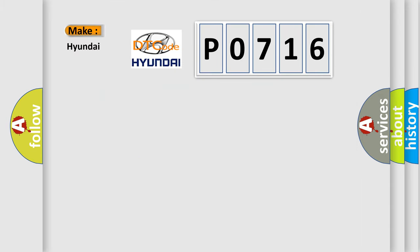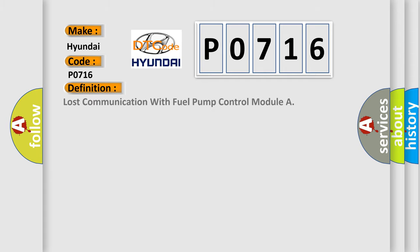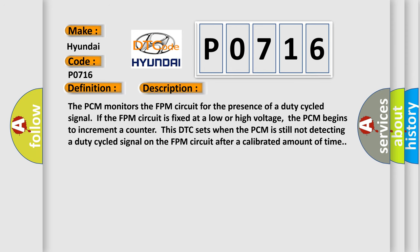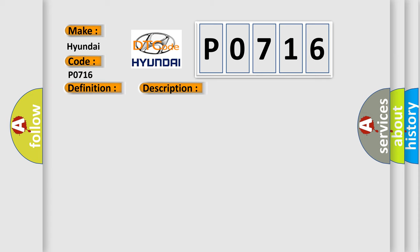What does the diagnostic trouble code P0716 interpret specifically? The basic definition is: lost communication with fuel pump control module. The PCM monitors the FPM circuit for the presence of a duty cycled signal. If the FPM circuit is fixed at a low or high voltage, the PCM begins to increment a counter. This DTC sets when the PCM is still not detecting a duty cycled signal on the FPM circuit after a calibrated amount of time.